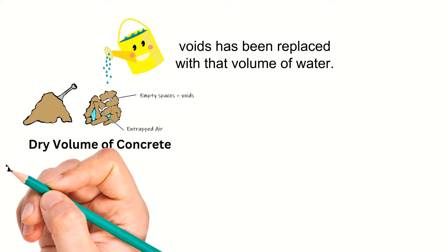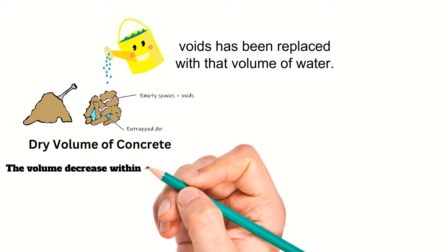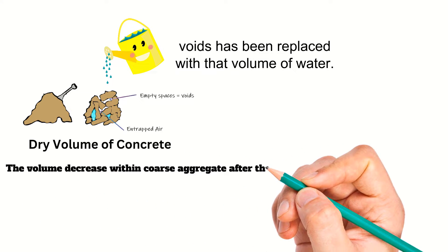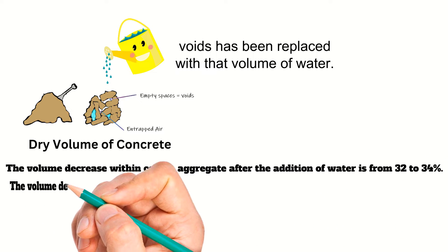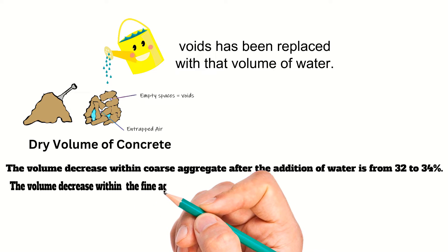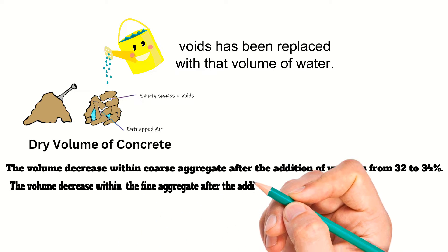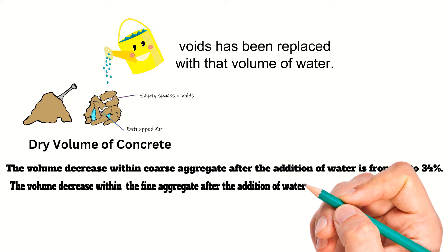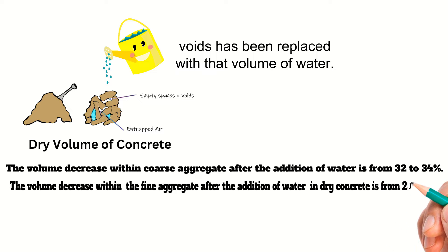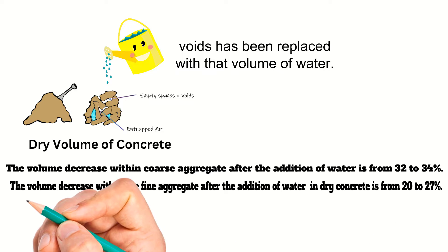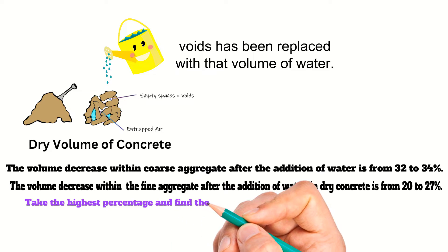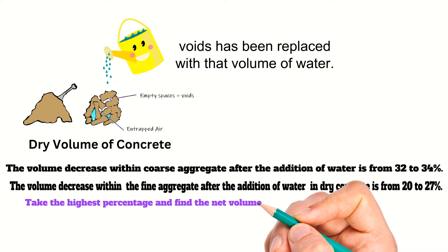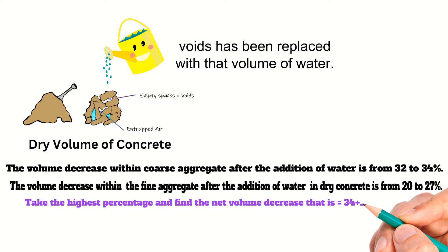The volume decrease within the coarse aggregate after the addition of water is from 32 to 34 percent. Similarly, the volume decrease within the fine aggregate after the addition of water in dry concrete is from 20 to 27 percent. Taking the highest percentages and finding the net volume decrease: 34 plus 27 gives us 61 percent.